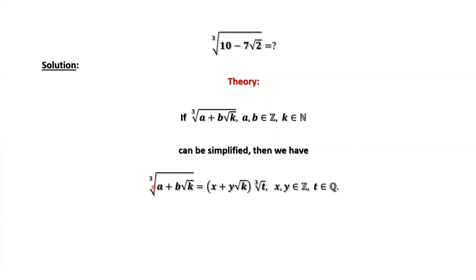If this can be simplified, then we have the following form. This third root equals x plus y times square root of k times the third root of t. Here, for some x and y, both x, y are integers, and t is a rational number.